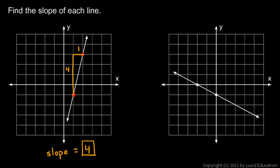In the next example, these two points are marked here, and as we go from point one to point two, we go down one and over two. So the rise here is negative one, and the run is two, so the slope is negative one over two, or negative one-half.